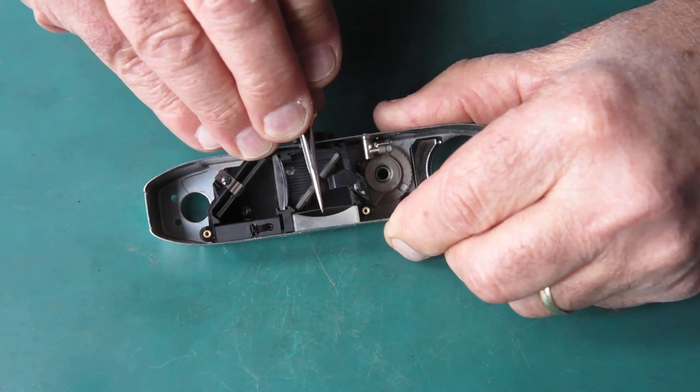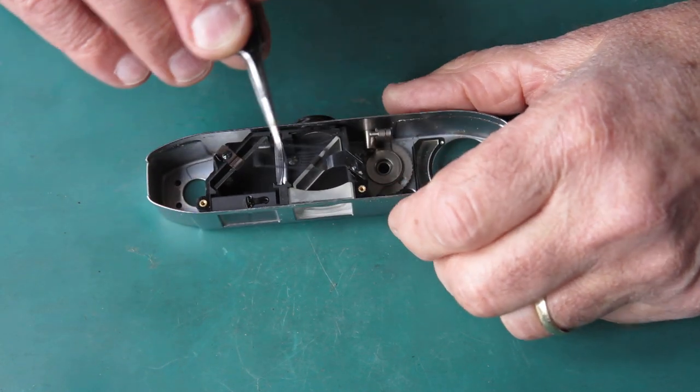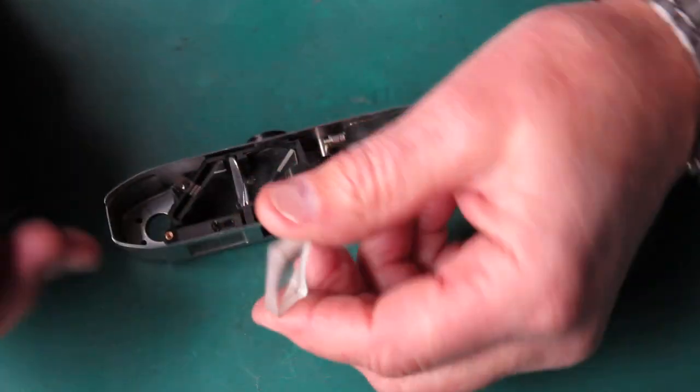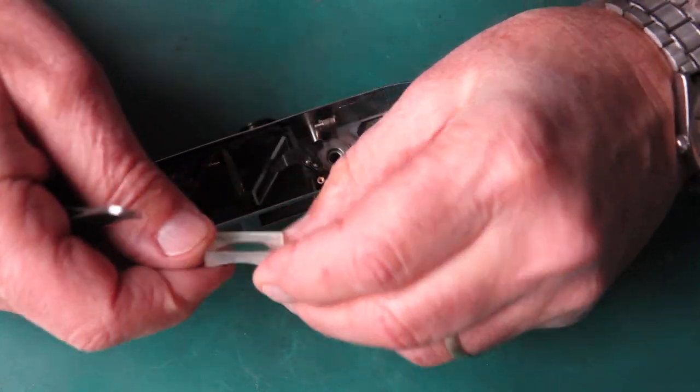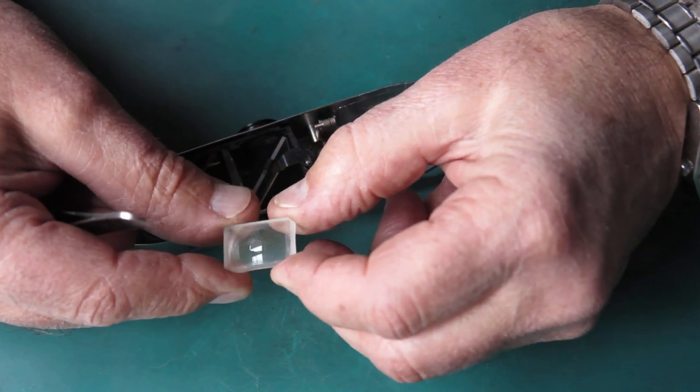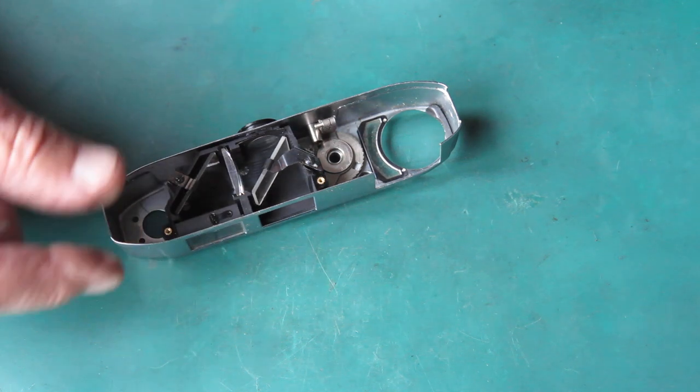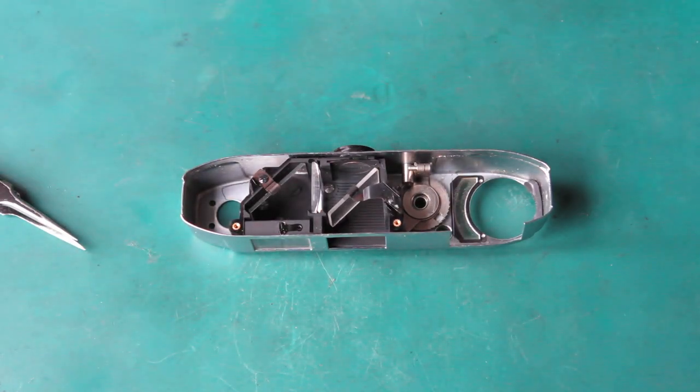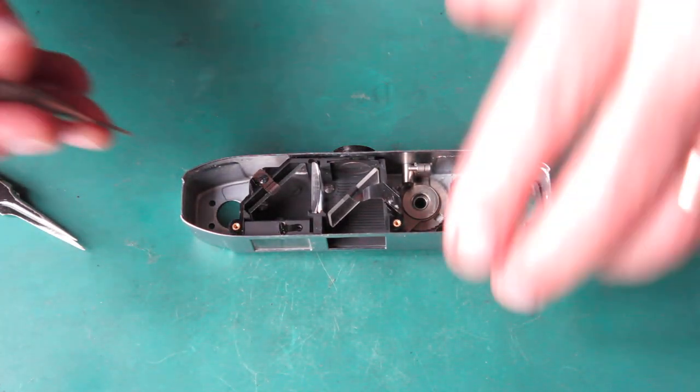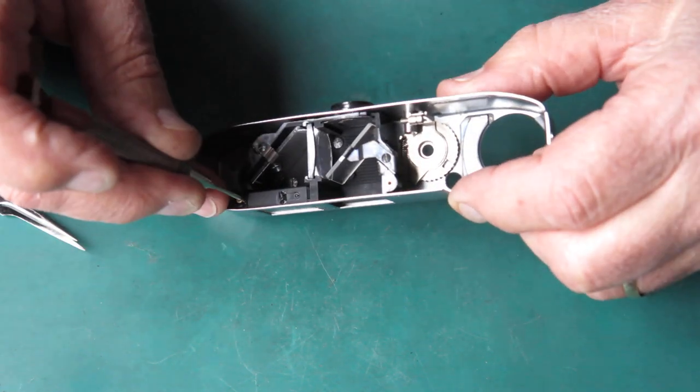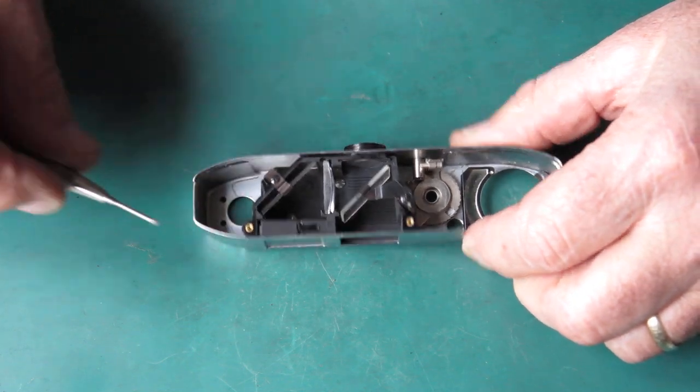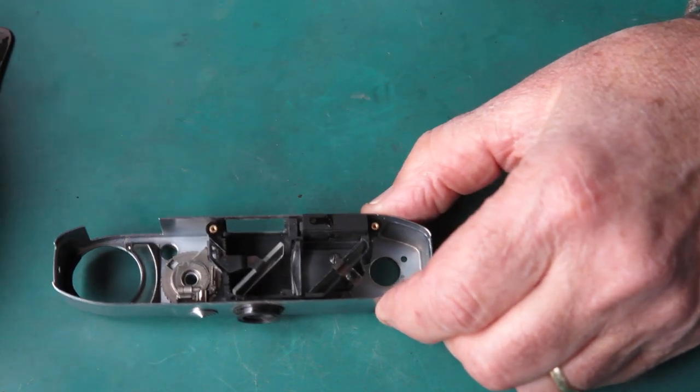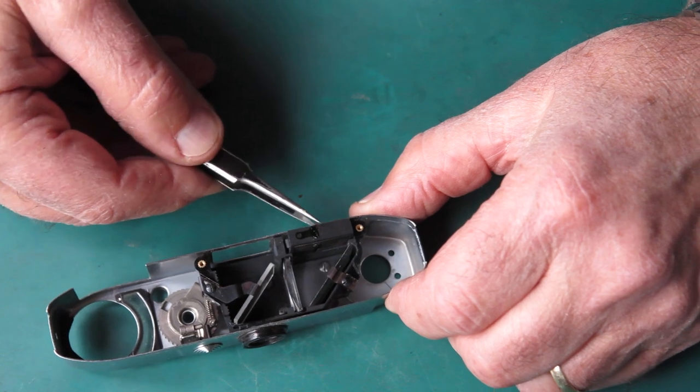So to continue on, we've got this little retainer. It's vaguely cup shaped and holds the front viewfinder lens in place. Now on a retinette 1A, this would be plastic and it'd be behind a glass window. Here it's glass, so no need for the glass window. We'll take this out.